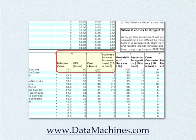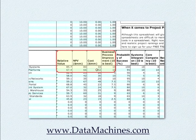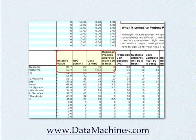For example, if we lower the NPV for the Improved Collaboration Systems project, the relative value of that project drops. If we restore it to its original value, the relative value of that project goes back up. Similarly, if we raise the cost of the project, its relative ranking goes down, and if we restore it, the relative ranking goes back up.